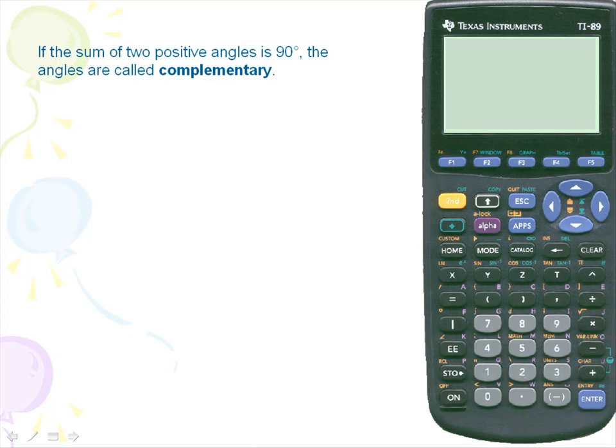If the sum of two positive angles is 90 degrees, the angles are called complementary.